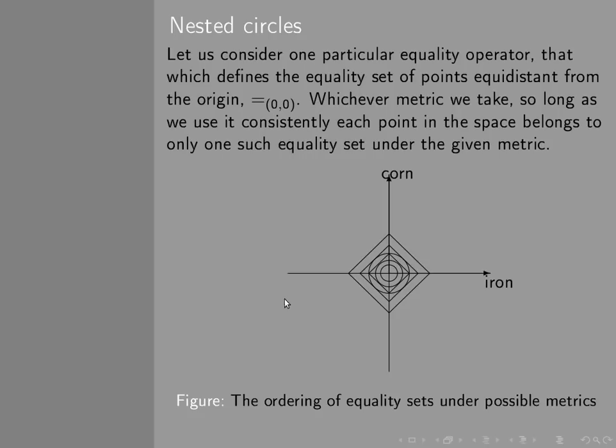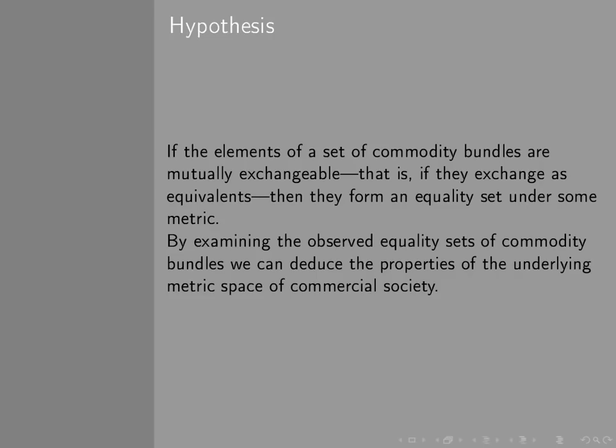OK, now I can see this is a relatively abstract argument, but the question is, why is this relevant? What I'm saying, if the elements of a set of commodity bundles are mutually exchangeable, that is to say, if they exchange as equivalents, then they form an equality set under some metric. And if we examine the observed equality sets that exist in commodity relations, we can deduce the properties of the underlying metric space which governs commercial society.